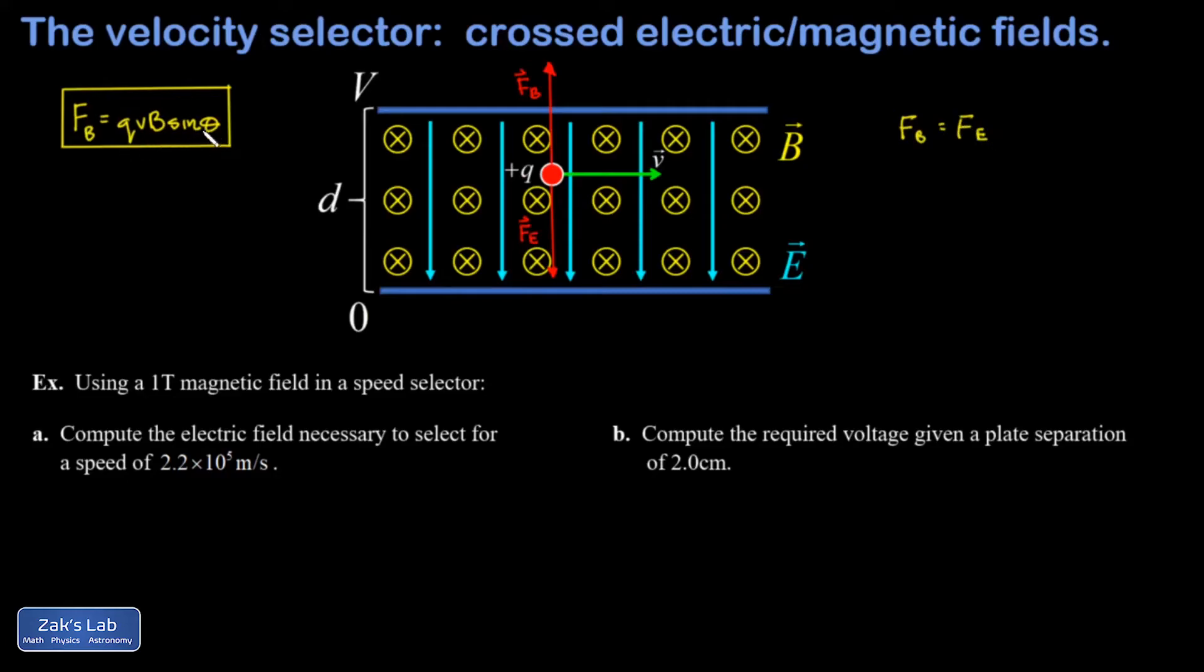And because my velocity is perpendicular to the magnetic field here, the sine theta in the Lorentz force law just gives me a one. So the magnitude of the magnetic force is just Qvb. The electric force on this particle is given by Qe.